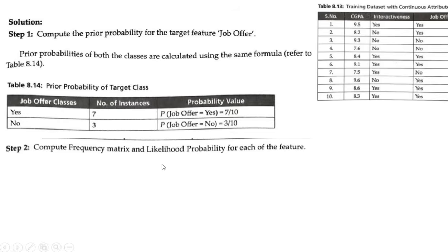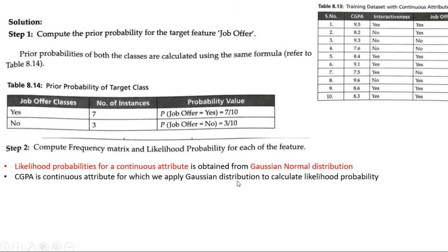Step 2 is to compute the frequency matrix and likelihood probability. The steps remain the same for Naive Bayes — first compute prior probability, then compute frequency matrix and likelihood probability. Now we find the likelihood probability for each feature. Let us first find it for CGPA. The difference here compared to the previous problem is that CGPA is now a continuous value, so we find the likelihood probability for CGPA using the Gaussian normal distribution.